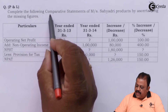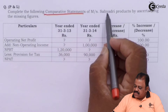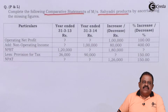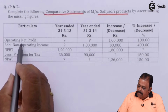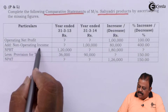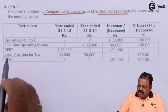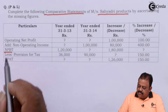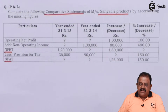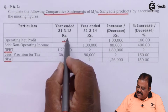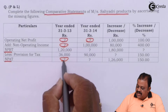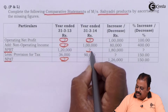Complete the following comparative statement of Saiyadri Products by ascertaining the missing figures: operating net profit, add non-operating income, net profit before tax, less provision for tax, net profit after tax. Question marks indicate some information is missing which we are required to find out.